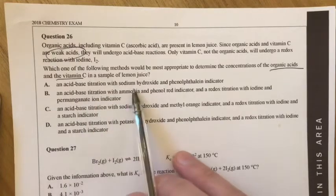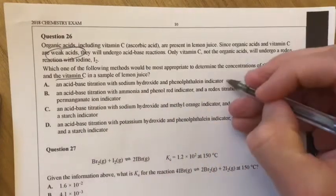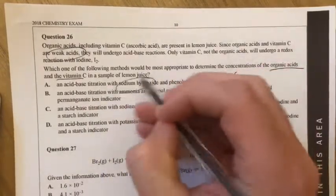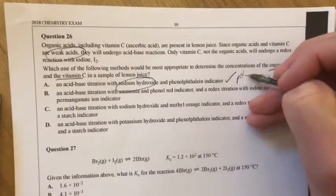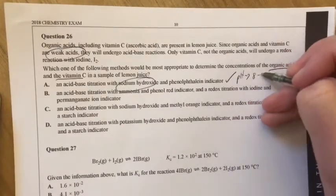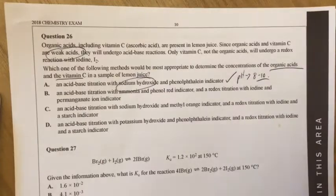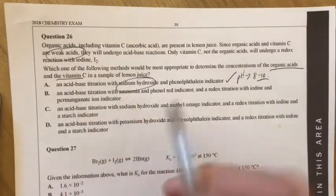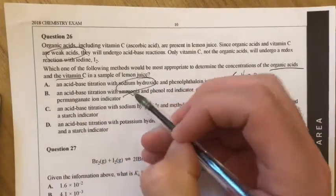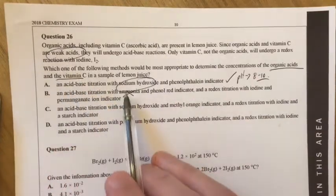Acid-base titration with sodium hydroxide and phenolphthalein indicator looks good because sodium hydroxide is a strong base, which means the pH change at endpoint will be around about 8 to 10, just slightly above 7. Acid-base with ammonia, no. Ammonia is a weak base, so therefore you can't titrate a weak acid and a weak base, so that's out.